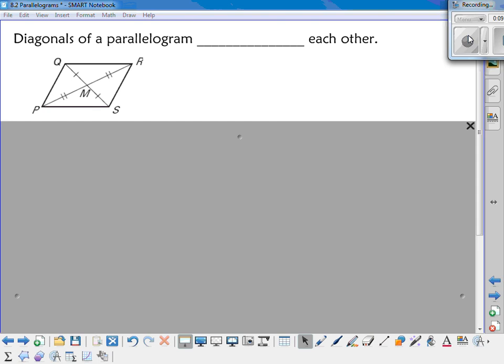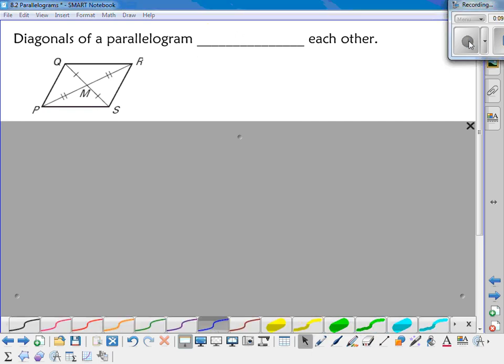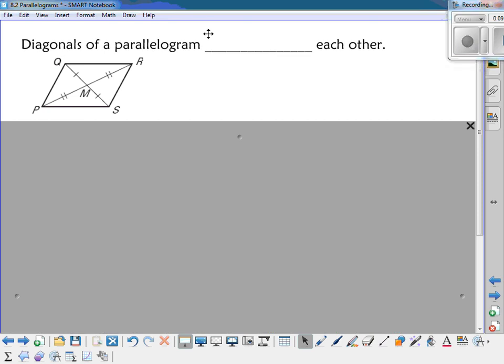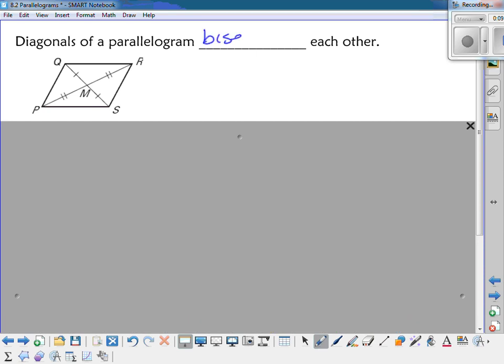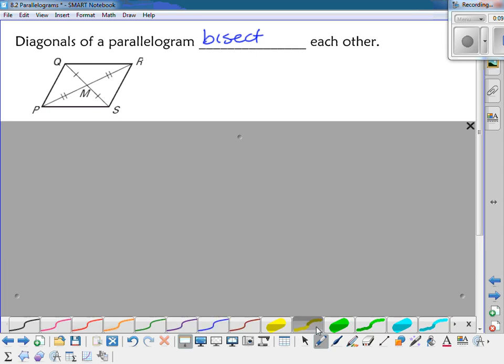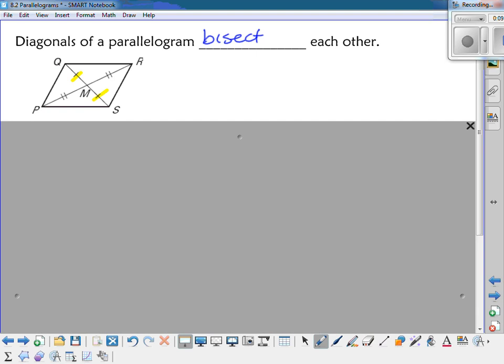One more property regarding diagonals. The diagonals of a parallelogram bisect each other. So in my figure then, we can see that QM is going to be equal to the other. So this is congruent to SM and PM is congruent to RM.